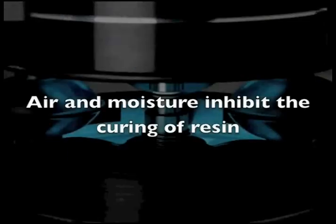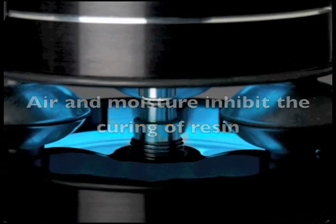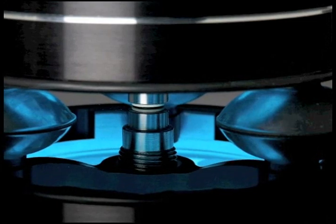Number three, air and moisture can inhibit the curing of resin. Removing these two elements is critical for the resin to cure completely.